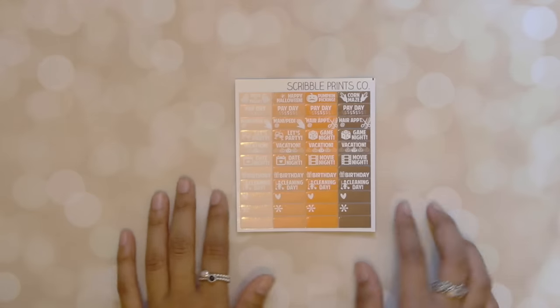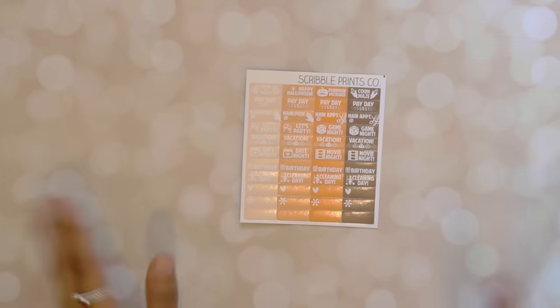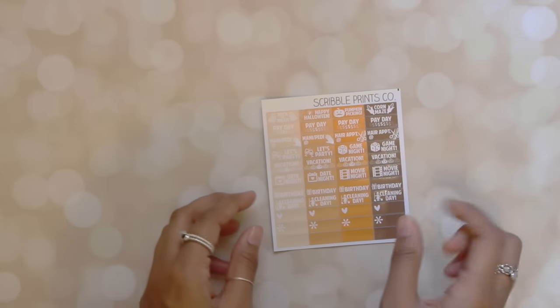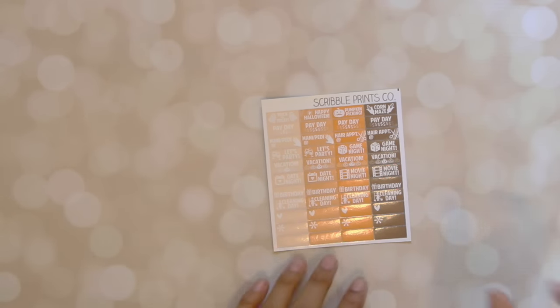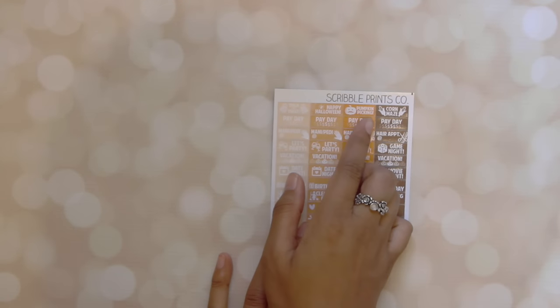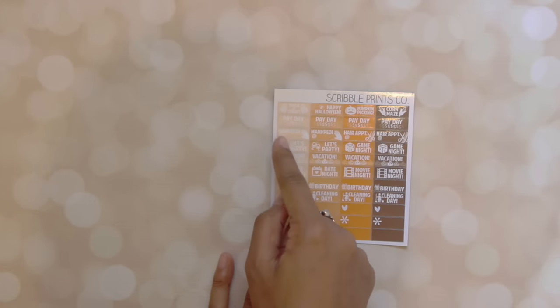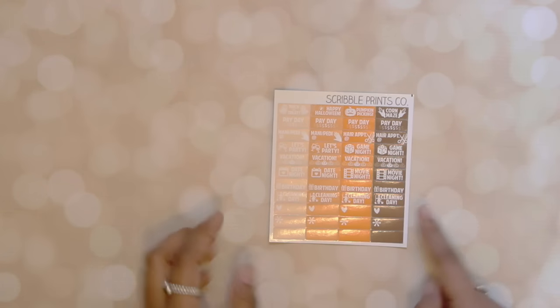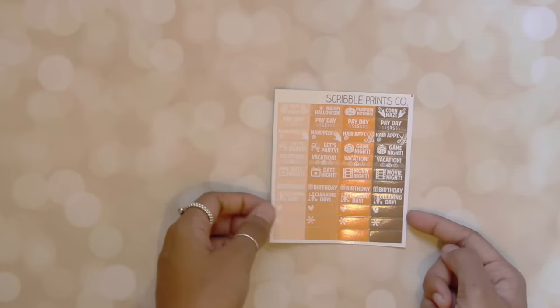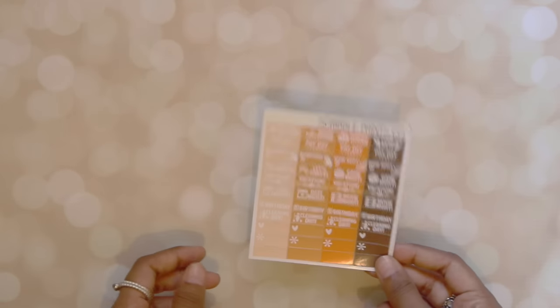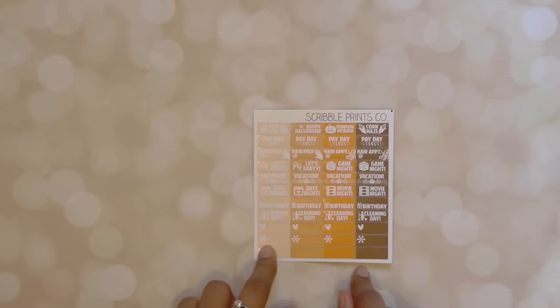And last but not least from Scribble Prints Co. is this new accessory that she came out with. And it's just a bunch of little tiny things that go next to the date. And you get a bunch of monthly-themed things. So like Trick or Treat, Happy Halloween, Pumpkin Picking, Corn Maze. And you get four paydays. You get mani-pedi, hair appointment, let's party, game night, vacation, date night, movie night, birthday, cleaning day, and then some hearts, asterisks, and blanks. I'm not sure if I'll get these again. It kind of depends. I'll see how I utilize these this month and then I'll decide. But I think this is something that she's doing for every single month. So yeah, that's it for Scribble Prints Co.